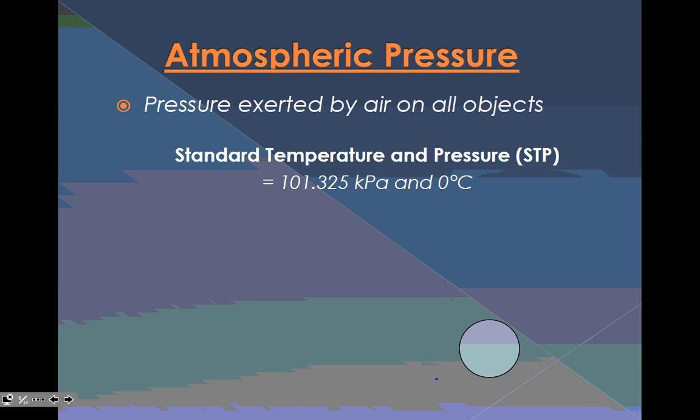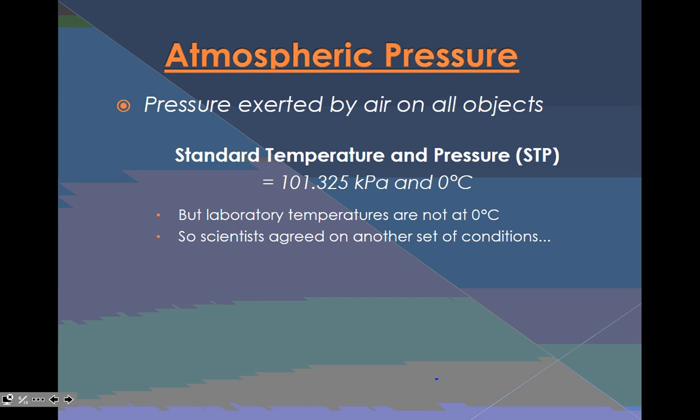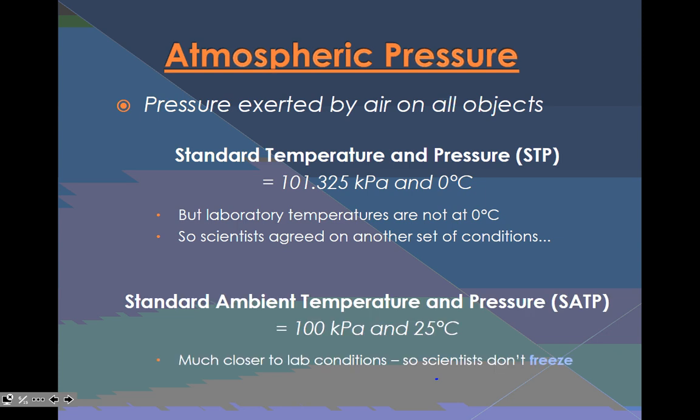Pressure exerted by air in all objects, standard temperature and pressure at STP. So STP means standard temperature and pressure. It's 101.325 kilopascals and zero degrees Celsius. But laboratory temperatures are not at zero degrees Celsius, because that would be way too cold. So scientists came up with something different. They came up with standard ambient temperature and pressure.